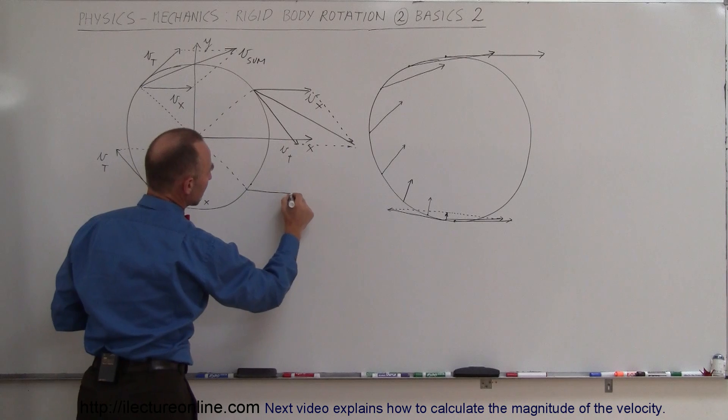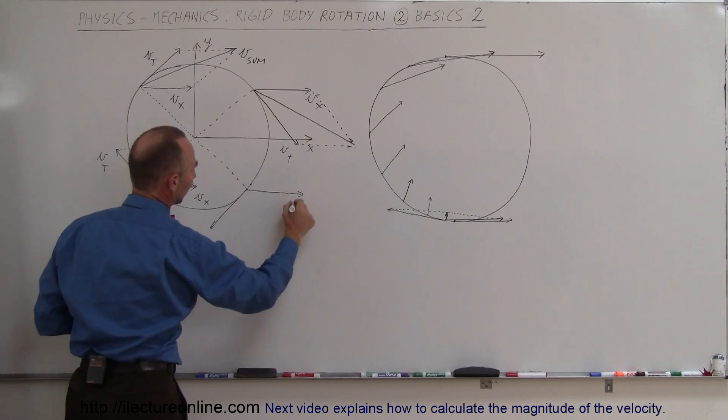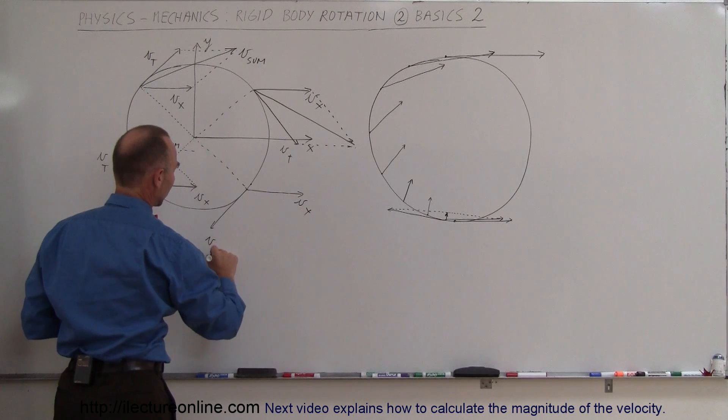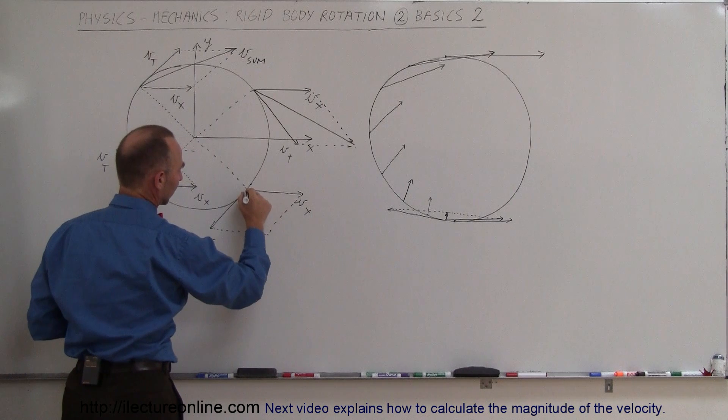If you want to see that clearly, let me draw another point down here at 45 degrees below the positive x-axis. Again we have the tangential velocity as well as the velocity in the x direction. This is V sub X, this is V tangential. If you draw this out like that, we get the vector sum.